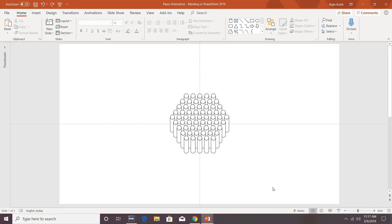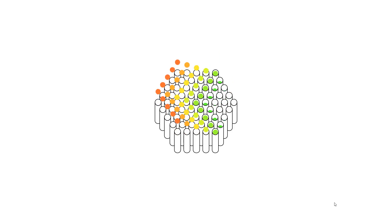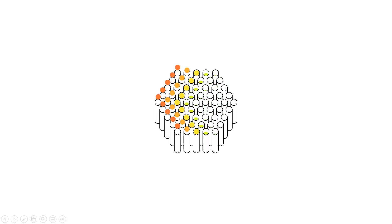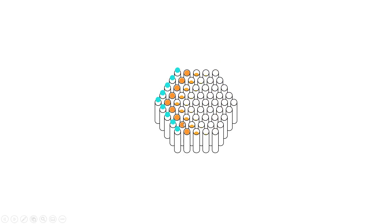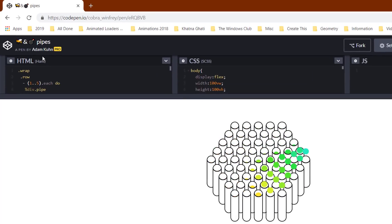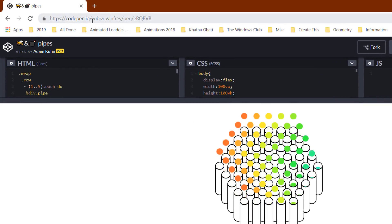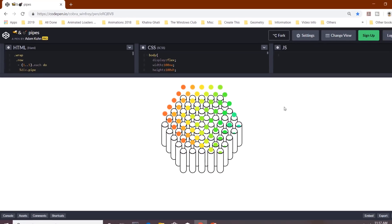Good morning everyone. This is Rajiv Kohli, welcome back to our channel The Teacher. In this tutorial I will show you how to create a pipe animation in PowerPoint 2016. The important thing about this animation is how you can hide ovals inside the pipe — this is called masking in PowerPoint 2016. On the second slide we have the same animation but the ovals are changing their color as they move up and down. This animation is inspired by one by Adam Kuhn at CodePen.io.